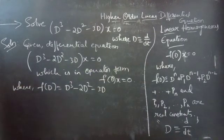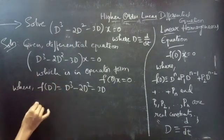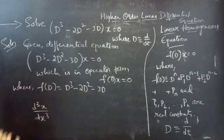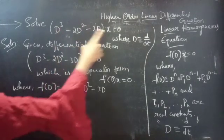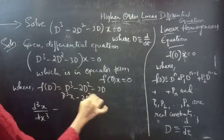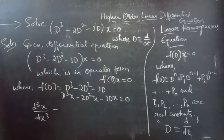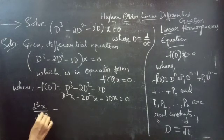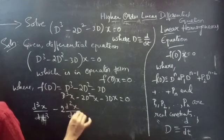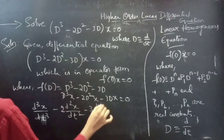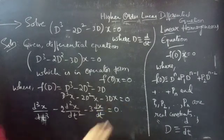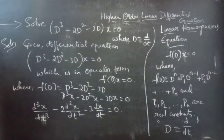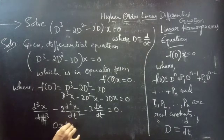We can also write this equation explicitly: d³x/dt³ - 2·d²x/dt² - 3·dx/dt = 0, replacing the differential operator D by d/dt, where t is the independent variable.